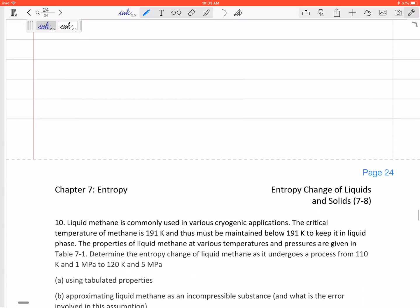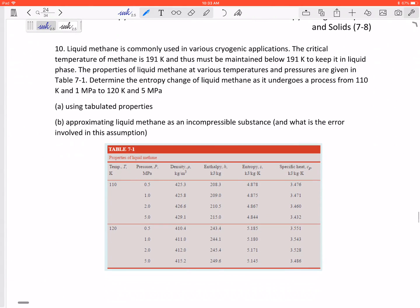Alright, let's look at one solids and liquids problem. Liquid methane is commonly used in various cryogenic applications. Critical temperature is 191 K and thus must be maintained below 191 Kelvin. The properties of liquid at various temperatures are given in the table. Determine the entropy change as it undergoes a process from 110 Kelvin and 1 MPa to 120 and 5 MPa.